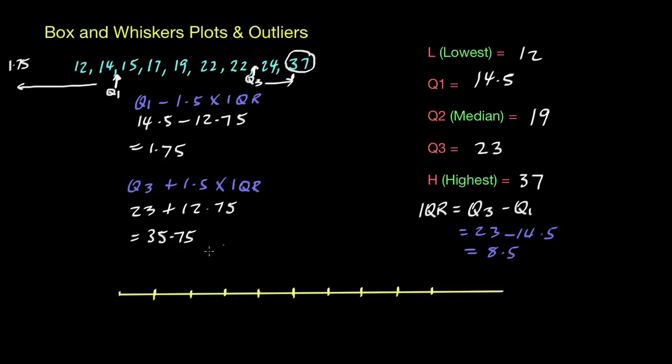So now the only thing left to do is go and draw up our box and whiskers plot and state where our outlier is.